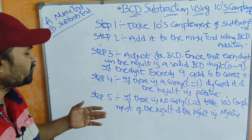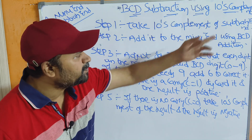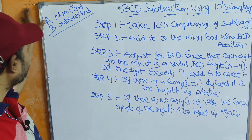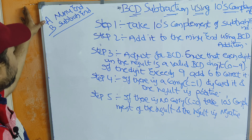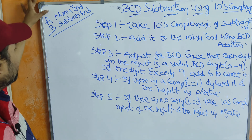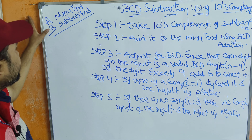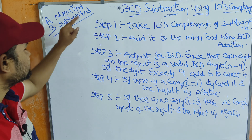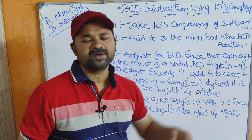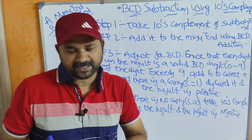Totally we need to follow 5 steps. Step 1: Take the 10's complement of the subtrahend. So let we have two numbers — the first number is denoted by A (the minuend) and the second number is denoted by B (the subtrahend). First we have to find the 10's complement of the subtrahend, that is the 10's complement of the second number.